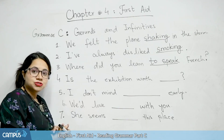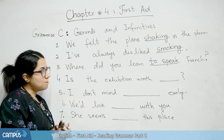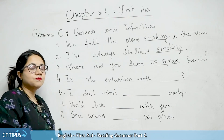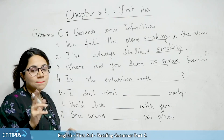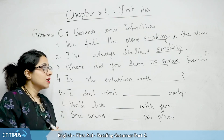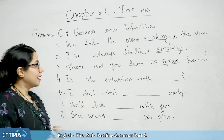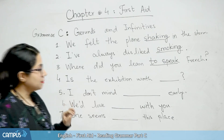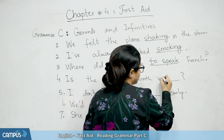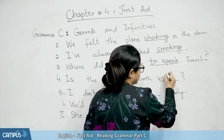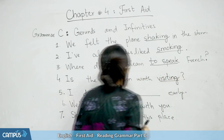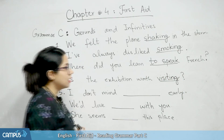The next sentence is: 'Is the exhibition worth blank?' and in brackets they have given the word 'visit.' The answer is: 'Is the exhibition worth visiting?' So here the gerund is used.